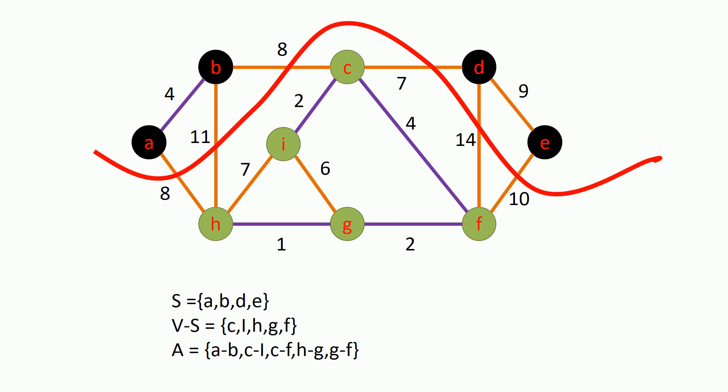For some set of edges, if no edge in that set crosses the cut, we say the cut respects that particular set. For example, if you consider set A which includes the edges between A and B, C and I, C and F, H and G, and I and F — none of these edges cross the cut. So we say the cut respects set A.